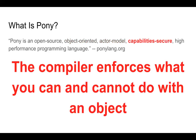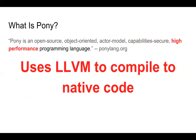It's capability secure — this means the compiler enforces what you can and cannot do with an object. If you have a reference to an object, there are some things you'll be able to do with it and some things you won't. It's a high-performance programming language that uses LLVM to compile Pony source code into native code — there's no virtual machine, you are running your code directly on the hardware.